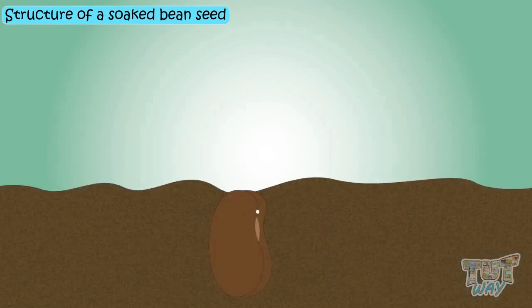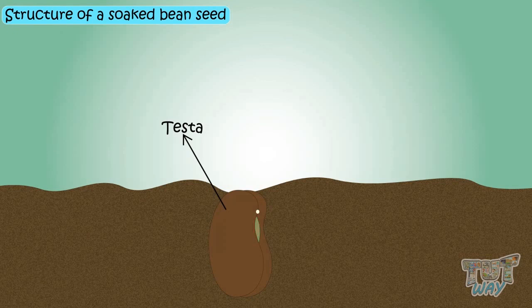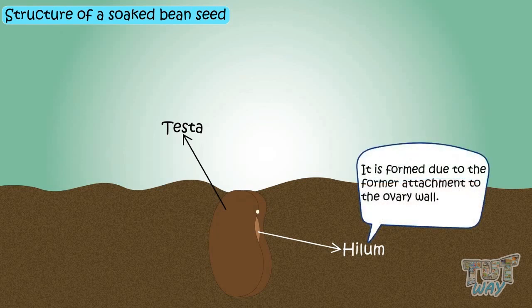This is a soaked bean seed. It has a hard outer covering called the testa. There is a brown scar on the seed coat called the hilum, formed from the former attachment to the ovary wall.